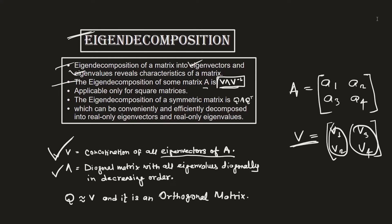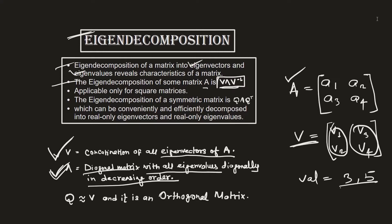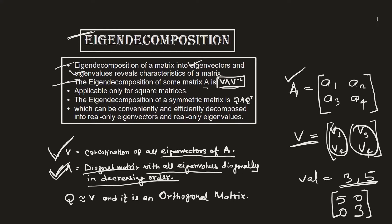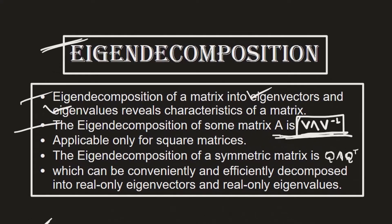The second symbol, which looks like lambda, is a diagonal matrix with all eigenvalues diagonally in descending order. For this matrix A, if the eigenvalues come out to be 3 and 5, then lambda will be a diagonal matrix with 5 first and then 3, with all other elements being 0, as per the definition of a diagonal matrix.